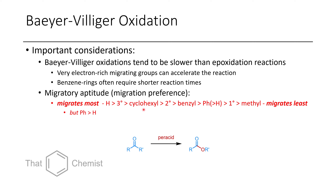This is really important to study. For the most part, it links with carbocation stability: an H+ ion is more stable than a tertiary carbocation, which is more stable than secondary, which is more stable than benzylic, which is more stable than primary, etc. This is one type of a 1,2-shift reaction, and you'll see why in a moment.